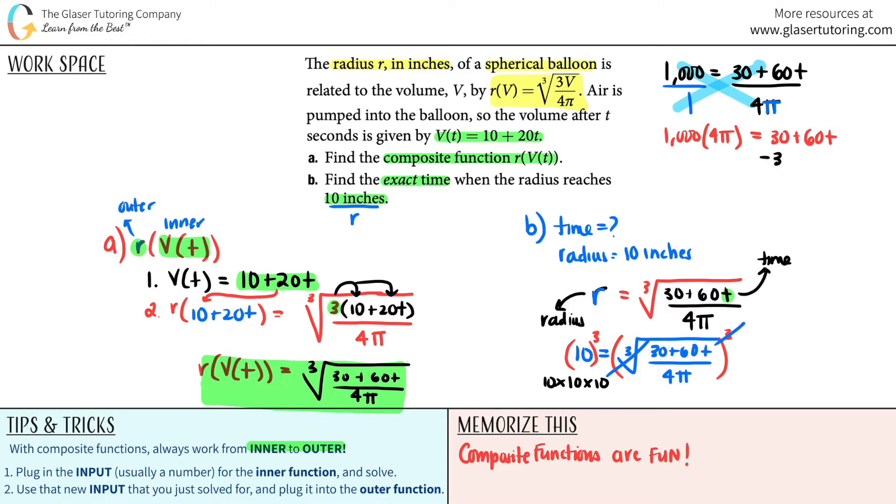So I have to get rid of the 30 on both sides. So 1,000 times 4π minus 30. That gets rid of this, right? And that equals 60t. And now I want t by itself. It's being multiplied by 60.